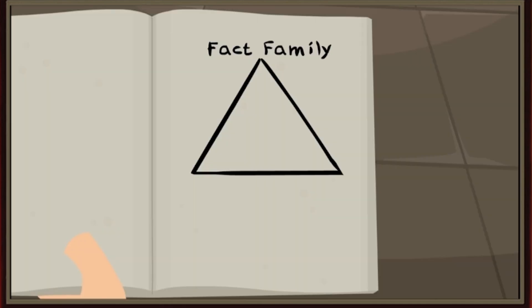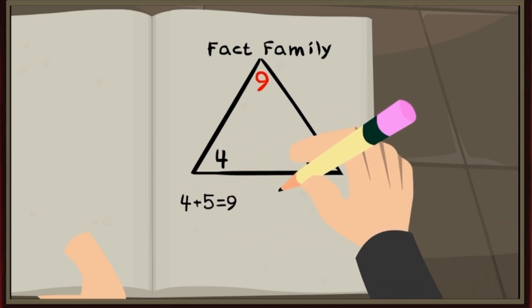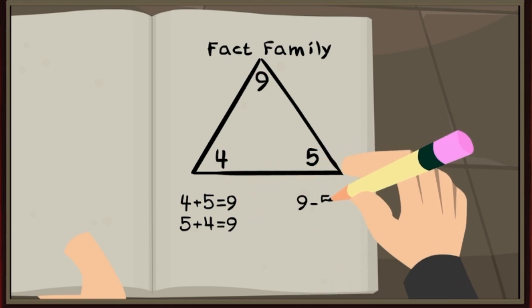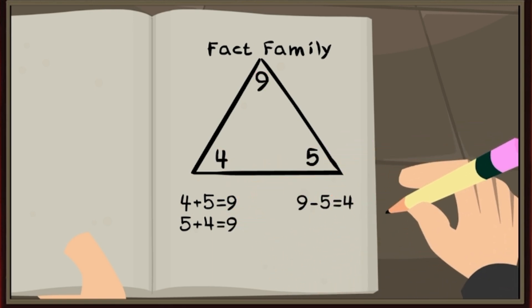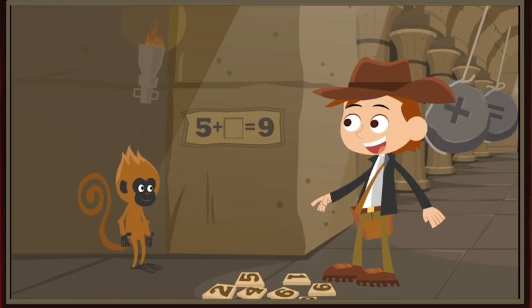Why didn't I think of that? We can use fact families to find the missing number. We need a fact family with nine as the biggest number, because that's the sum. One of the other numbers is five. I've got it! The only fact family like this is five, four, and nine. Four plus five equals nine. Five plus four equals nine. Nine minus five equals four. And nine minus four equals five. So the missing number is four.